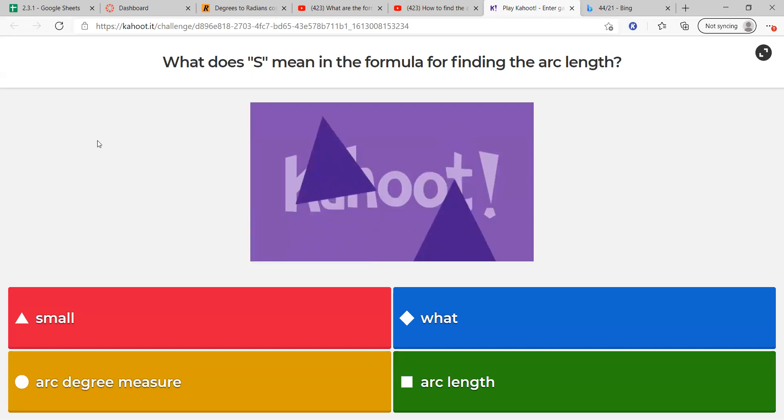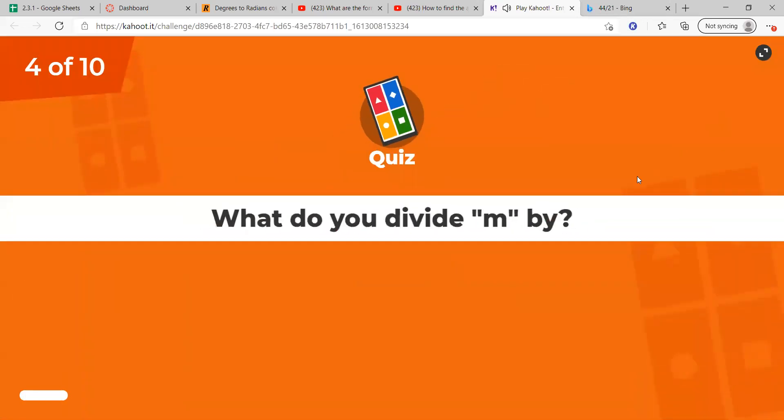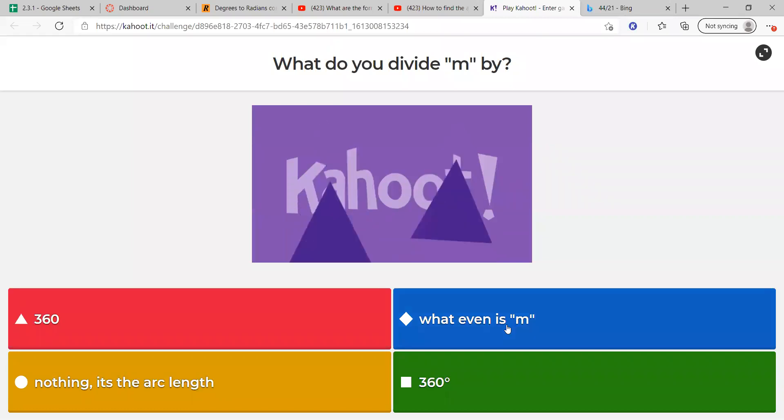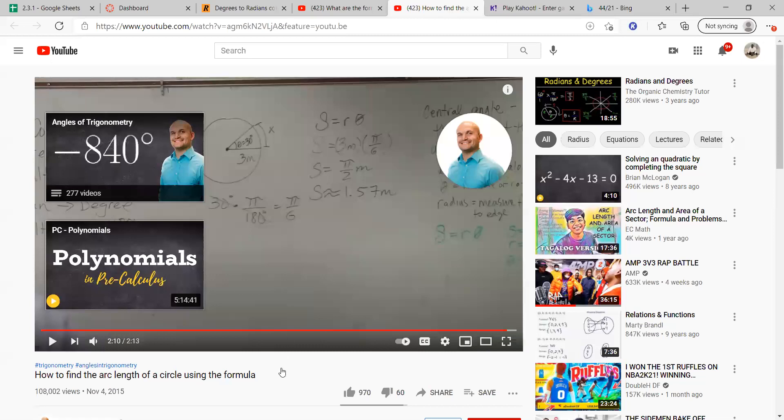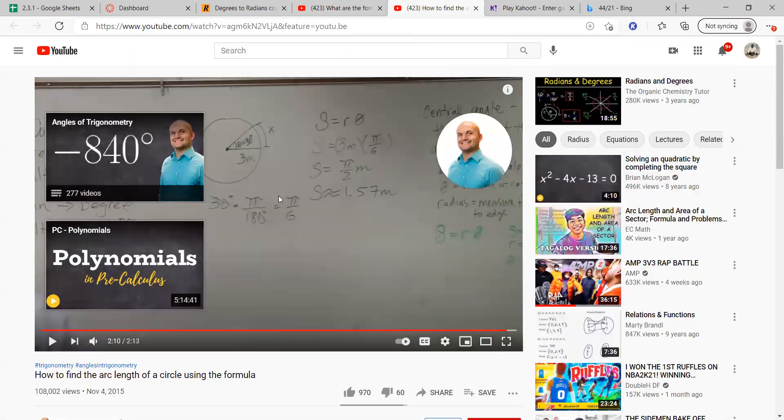Wait, what does S mean for the formula following the arc? The answer. The last two letters, the last two words. What's the last two words? Oh, arc length. Arc length. Don't worry about that one.